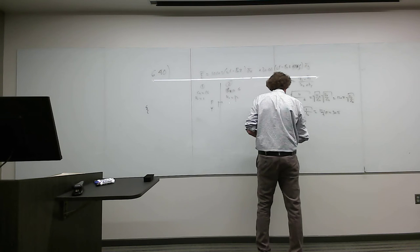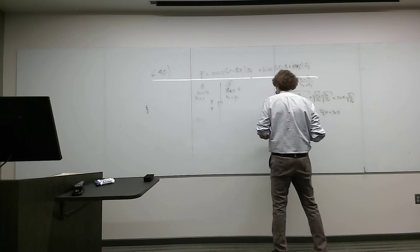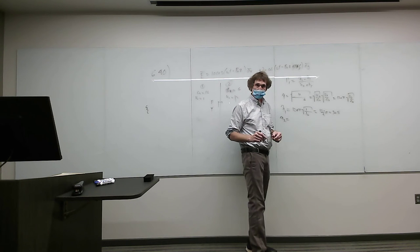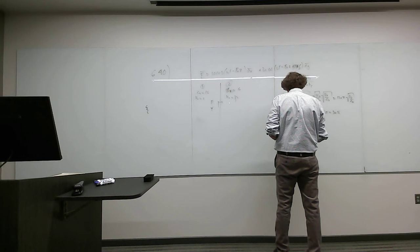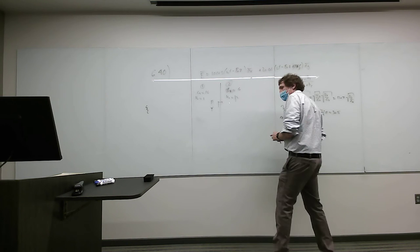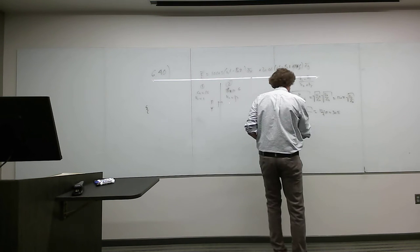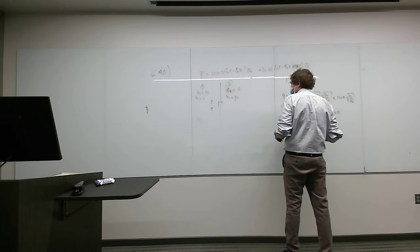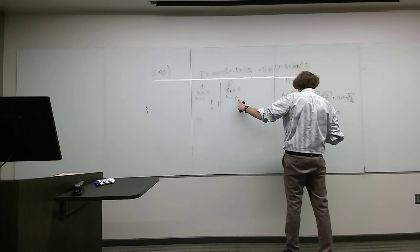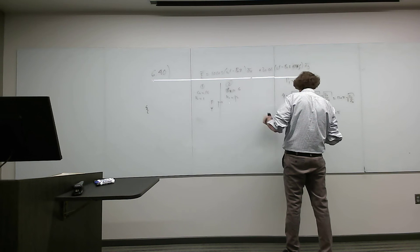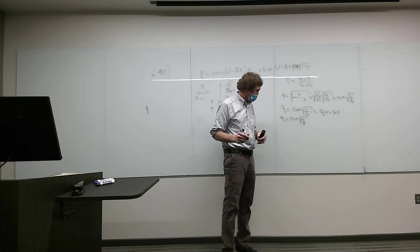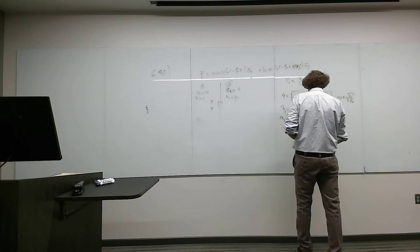Now for eta-2: with sigma equal to zero we default to 120-pi times the square root of mu-relative over epsilon-relative. Neither one of those is 1, so we have 120-pi times the square root of mu-relative, which is 12, over epsilon-relative, which is 6. That's the square root of 2, so eta-2 equals 120-pi times the square root of 2.